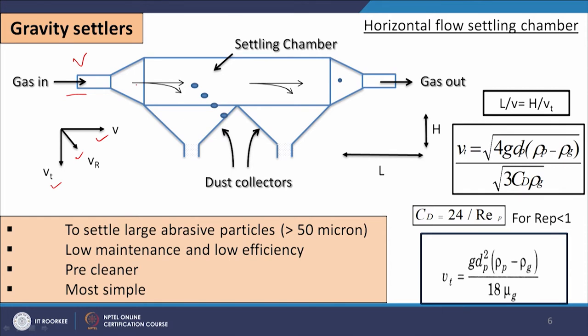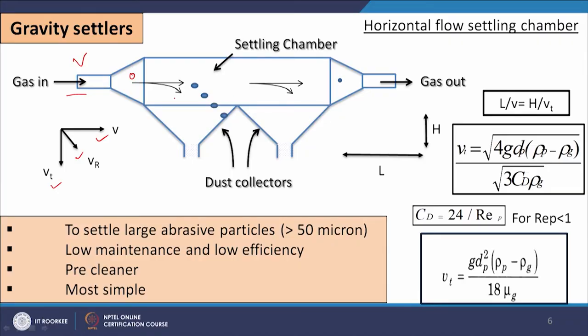If we consider one particle, the basic principle of separation is: if we can put something in its path, its flow will be arrested and the velocity in that direction becomes zero, so the particle will fall. For this particle to settle, the time required to travel from inlet to outlet must be sufficient for the particle to travel the full vertical distance equal to the height of the settling chamber. This is the basic requirement or design principle for this settling chamber.